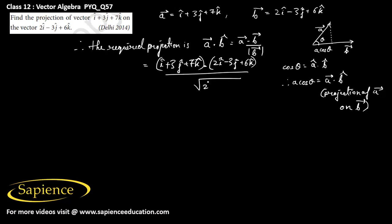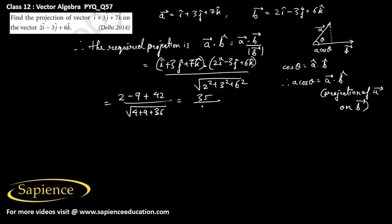The required projection equals (2 - 9 + 42) divided by the square root of (4 + 9 + 36), which gives 35 divided by the square root of 49, that is 35 divided by 7, which equals 5. So 5 is the required answer.